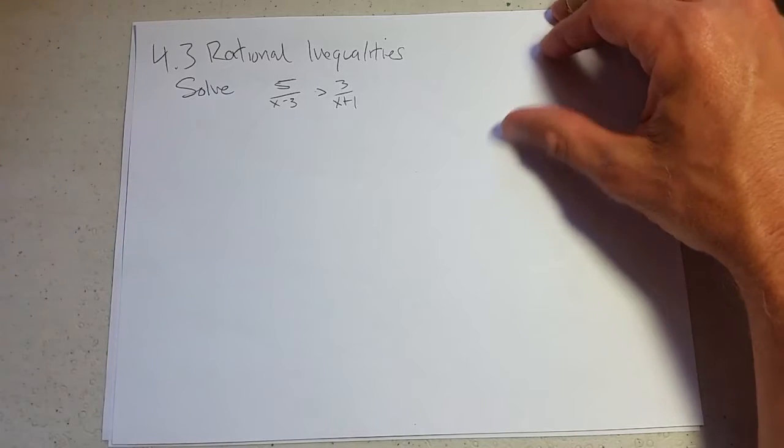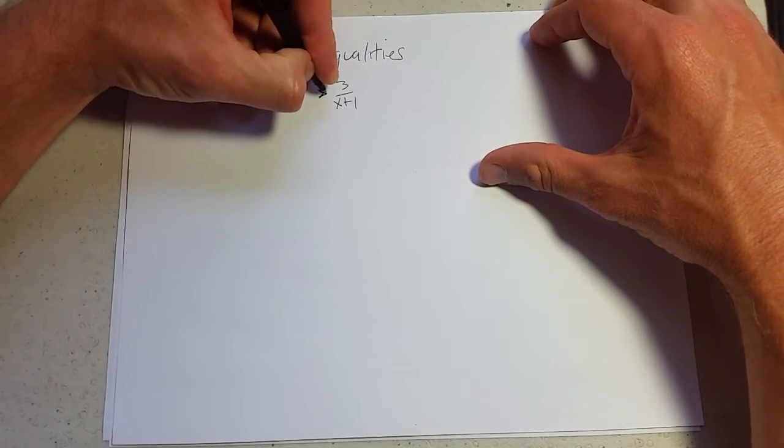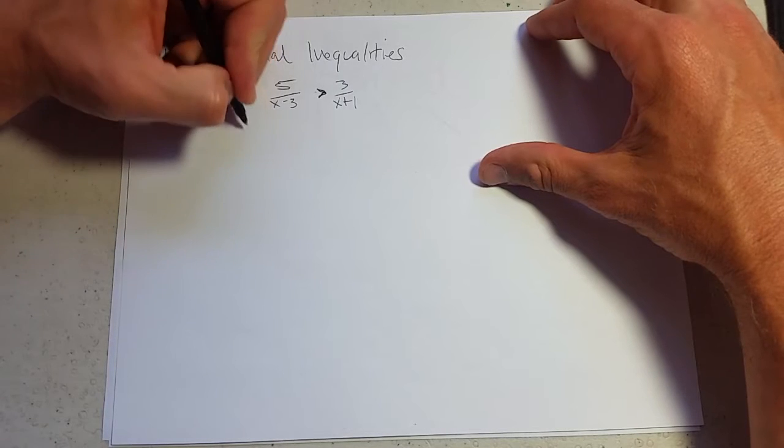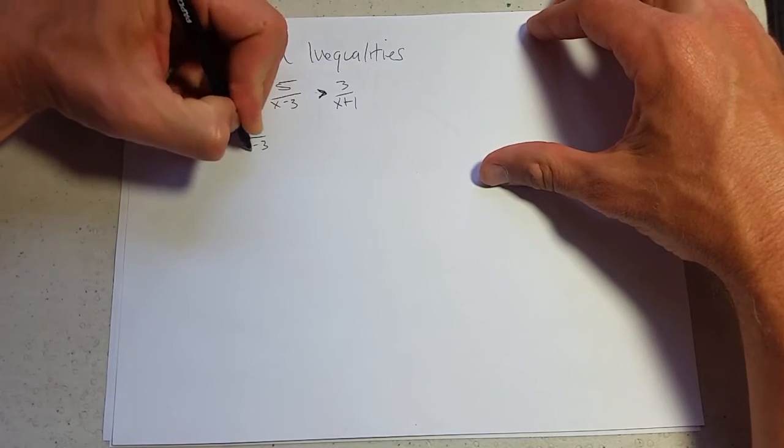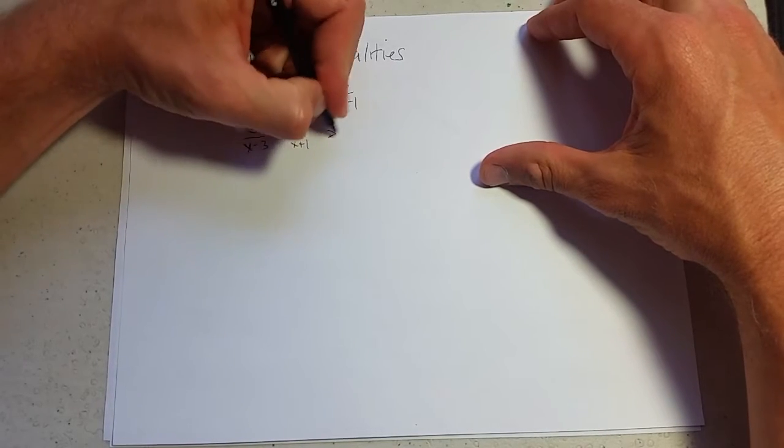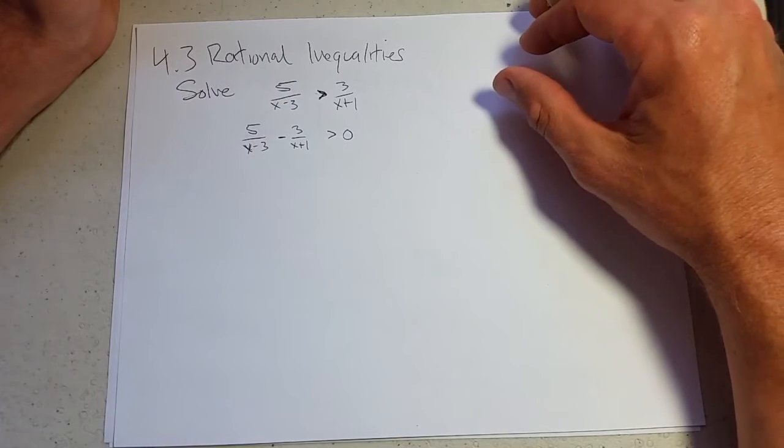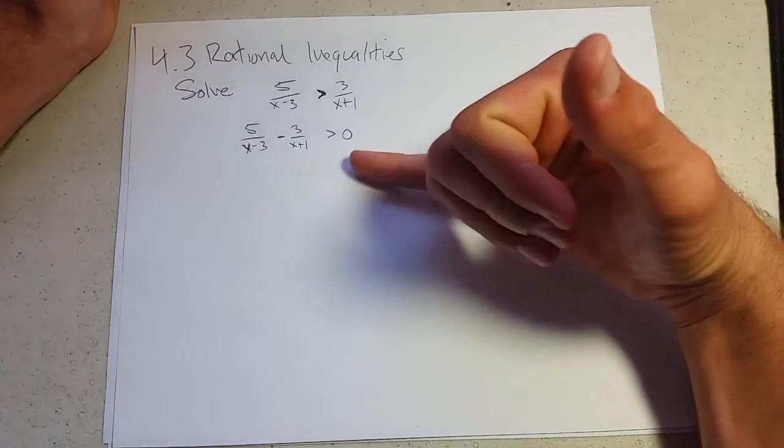So let's do this using some good math. What am I allowed to do and not worry about flipping an inequality? I can always subtract. So let's do that. So I don't have to worry about what x is. It's going to work out just fine. This inequality won't change.